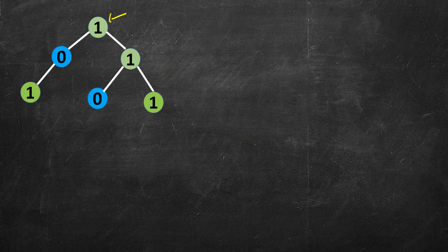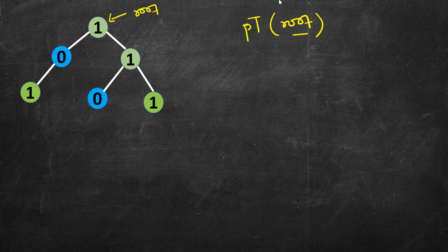Formally, the function is prune tree — I'll write pt — and we pass the root node pointer. It returns a node pointer. The tree node has a pointer to left, a pointer to right, and a value — these three fields.